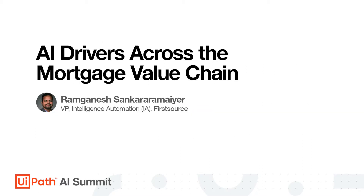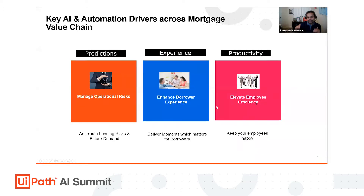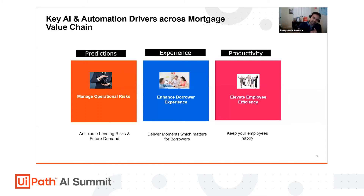Looking at today's AI maturity curve, we are at a stage where AI is very narrow and targeted towards certain use cases, rather than mature enough to mimic general human intelligence. That's a fact. In BFS and especially in mortgage, we have seen three key areas where AI is gaining a lot more momentum, and I want to touch upon those three areas.